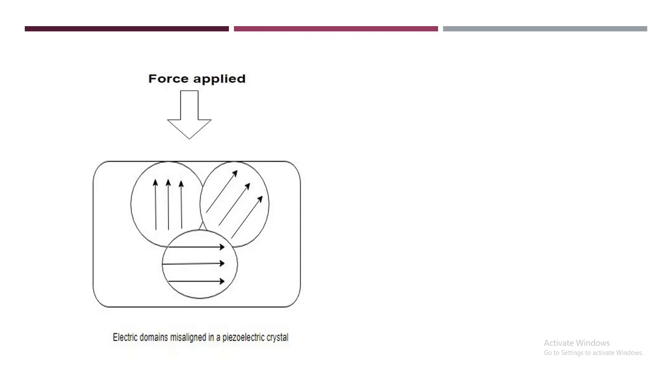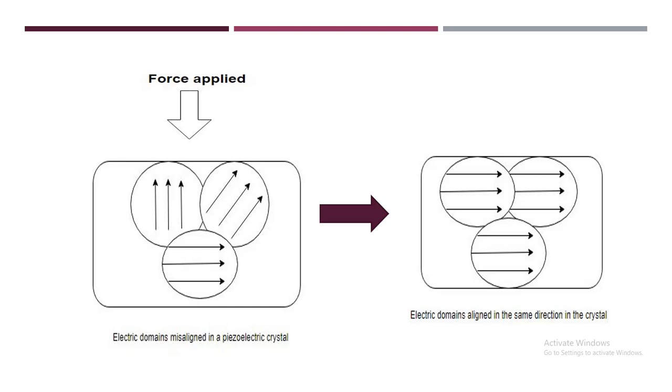When you apply force to this piezoelectric crystal, what happens is that these electric domains align in the same direction. Now this results in an unequal charge distribution on both sides of the crystal. There is an excess of electrons on one side and there is a deficiency on the other side. This results in the production of voltage.